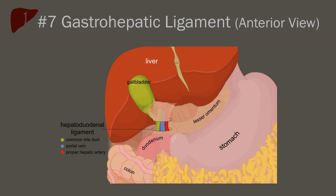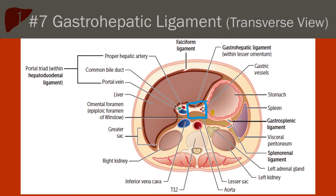The seventh ligament is the gastro-hepatic ligament. The gastro-hepatic ligament, also known as the lesser omentum, is composed of two folds of the visceral peritoneum. It continues from the ligamentum venosum, traveling inferiorly to the lesser curvature of the stomach and duodenum. This anterior view of the abdomen shows the gastro-hepatic ligament coming from the posterior liver and connecting to the lesser curve of the stomach. In a transverse view, the ligament can be seen in cross section leaving the liver and connecting to the stomach.